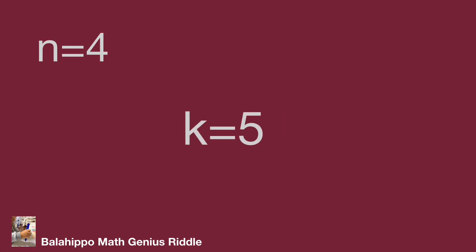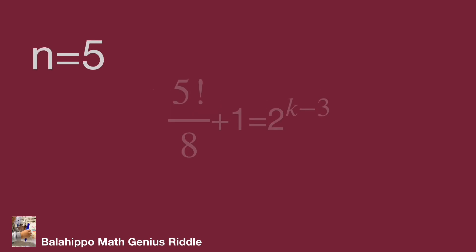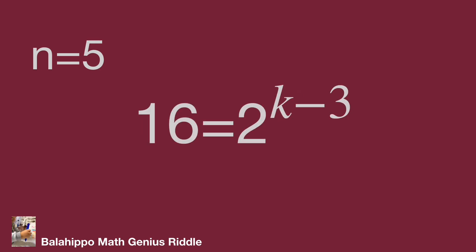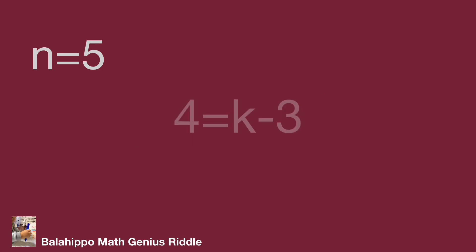For n equals 5: n factorial over 8 equals 15, and 15 plus 1 equals 16. And 16 equals 2 to the power of 4. So 2^4 equals 2^(k−3), then 4 equals k minus 3, giving k equals 7. That's the second answer.